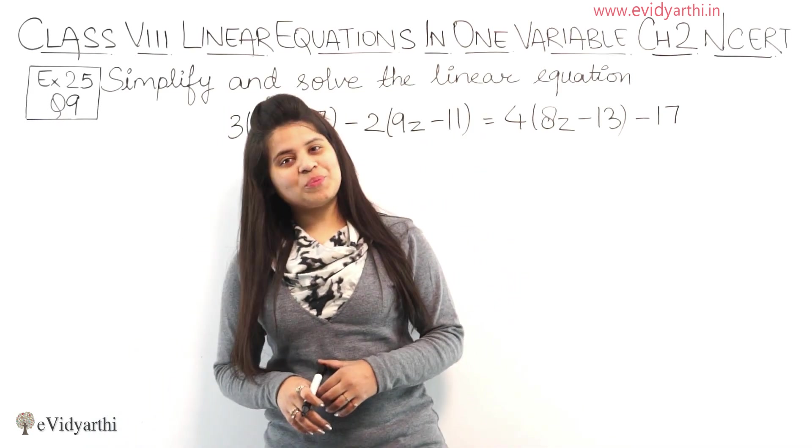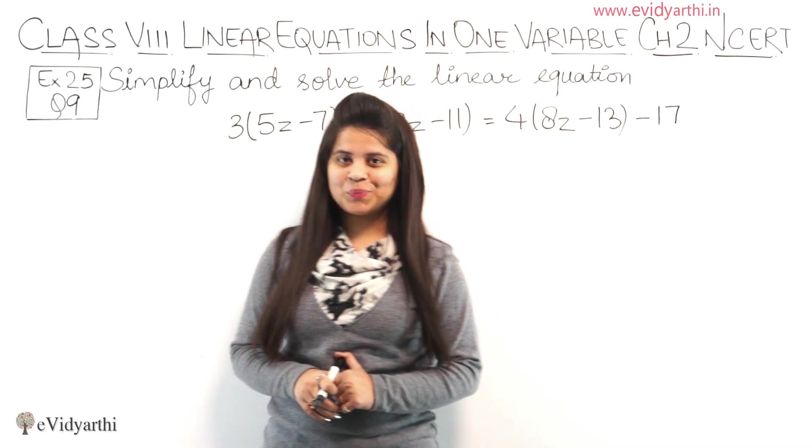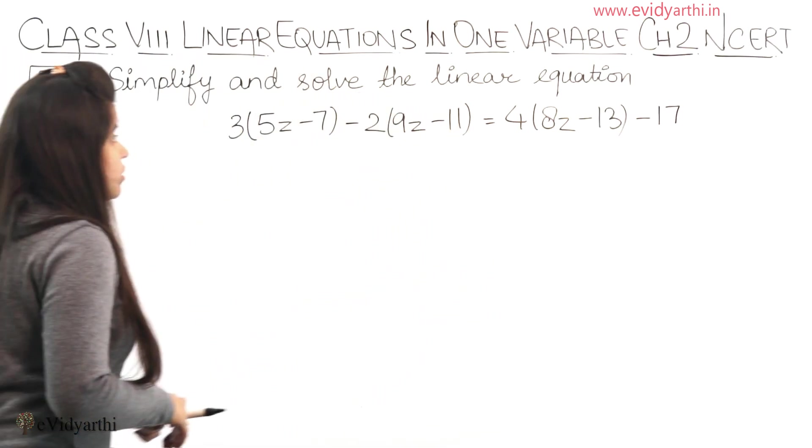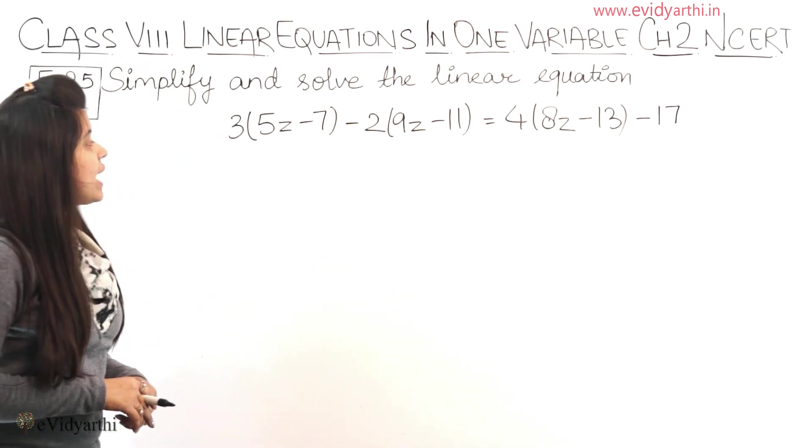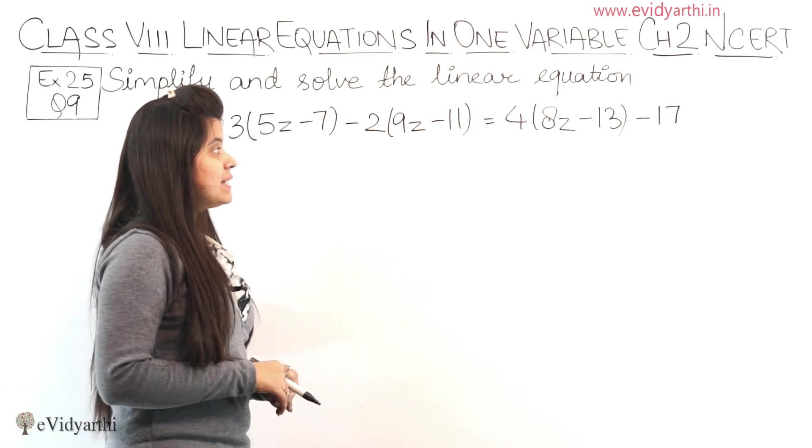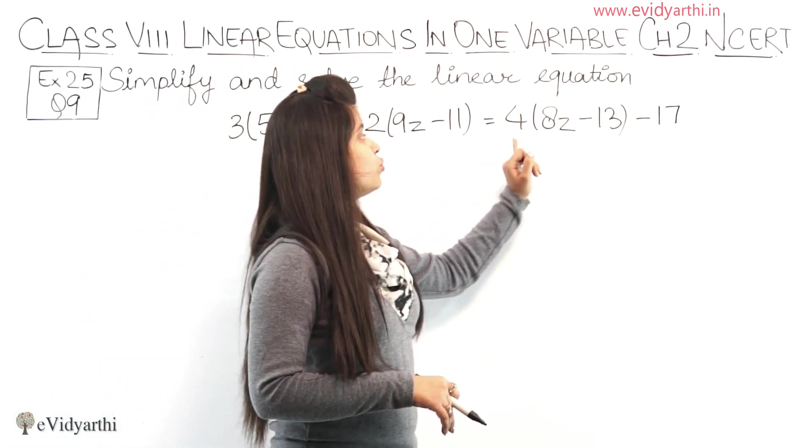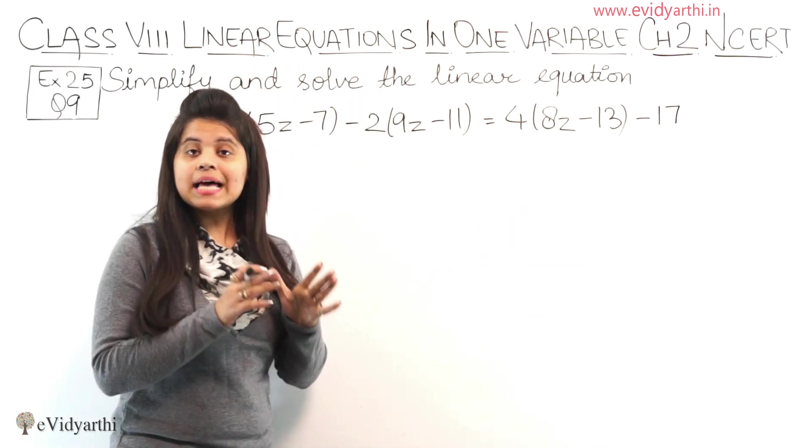Hello everyone, this is Mansi from Evidyarthi and now coming to question number 9, exercise 2.5. In this question we have to simplify and solve the linear equation: 3(5z - 7) - 2(9z - 11) = 4(8z - 13) - 17.